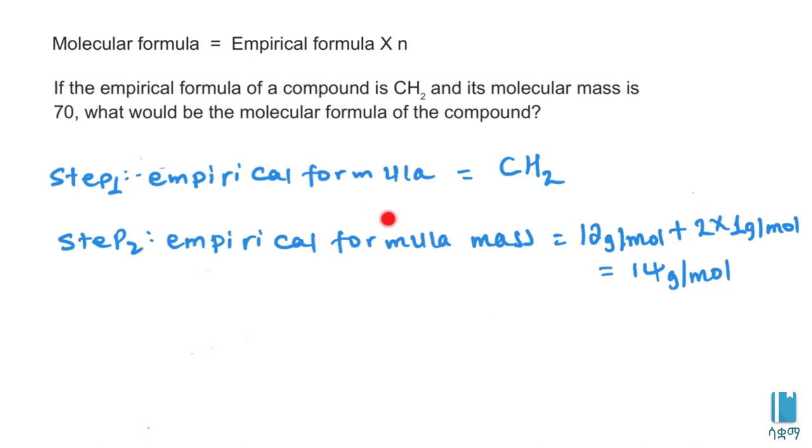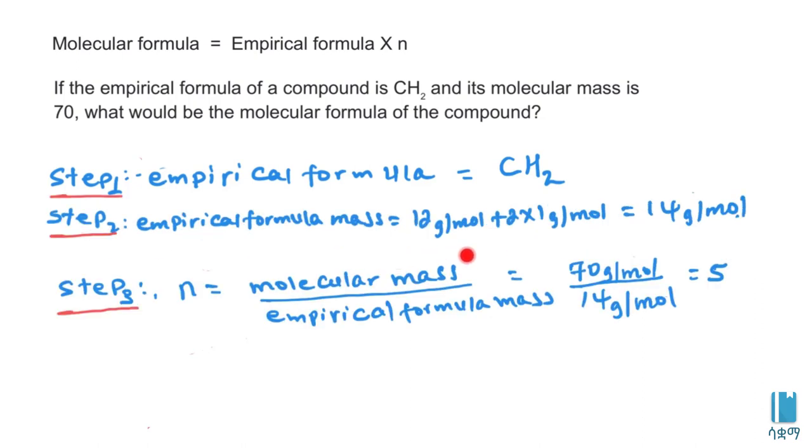Calculate n by dividing molecular mass by empirical formula mass. Molecular mass is 70 divided by empirical formula mass 14, which equals 5. The molecular formula equals empirical formula times n.